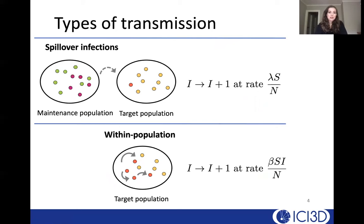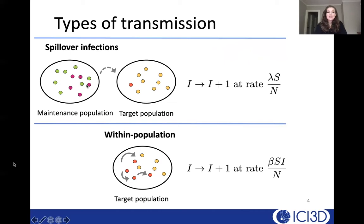Here's an illustration of those two types of transmission events. We have spillover infections from the maintenance population where rabies normally circulates and is endemic. Occasionally, an individual from that population will interact with the target population — not necessarily the population we're most concerned about, but the one we're focusing on for our study. The infected individuals in our target population will be the infectious component, and the rate of spillover infections will be lambda times S over N — the spillover rate lambda times the susceptible fraction in the target population.